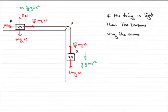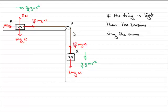Now, how have we used the fact that the string is light? Well, if it were not light, as B descended down here, more of the string would come over the edge here and would add to this mass, which would then affect the acceleration and it would then affect the tension, because all of these would then have to vary.